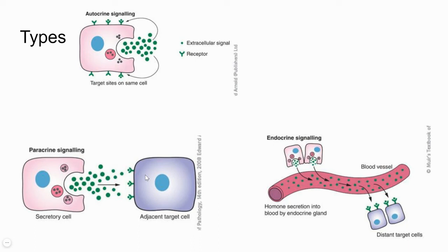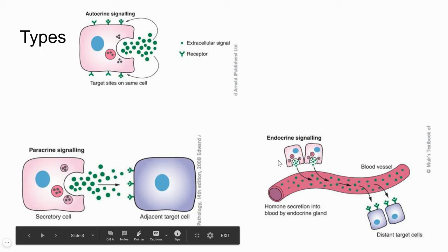The third type is endocrine signaling, where signal molecules are produced at a distance but reach the target through the bloodstream — entering and exiting blood vessels to reach the target cell, tissue, or organ. So the basic structure of cell signaling includes three main components: the signal molecule, the receptor, and the target cell. The sender and target may be the same cell (autocrine), closely located (paracrine), or far apart with the signal traveling through the bloodstream (endocrine).